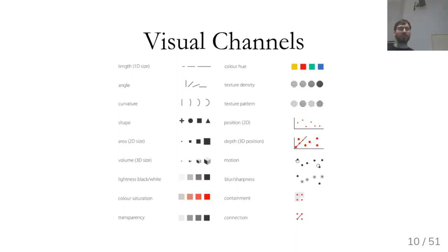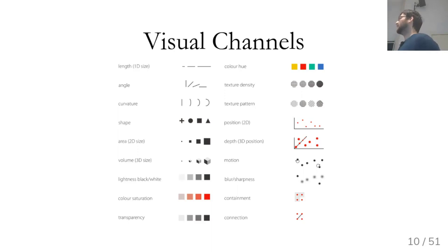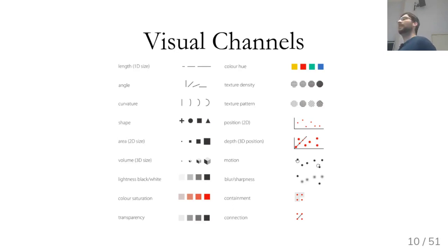You could come up with even more of these channels, but if you look at any standard visualization, you can usually think of it as mapping some aspect of the data to one of these things. One aspect might be mapped to angle, to area, to color, or to the x-axis or the y-axis.